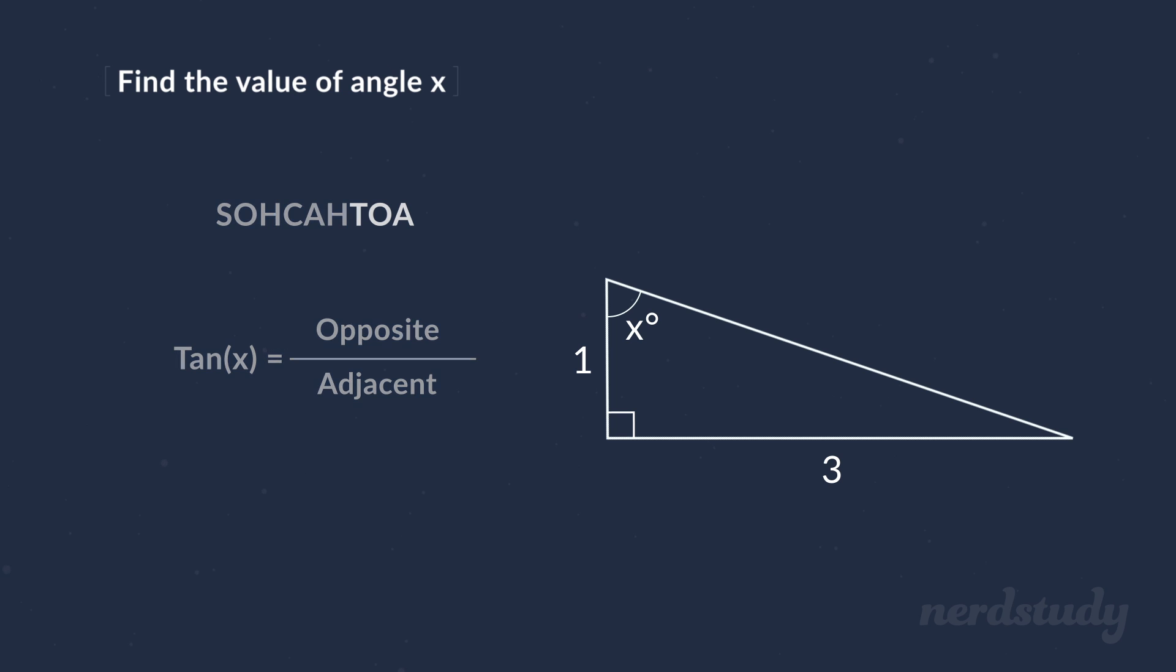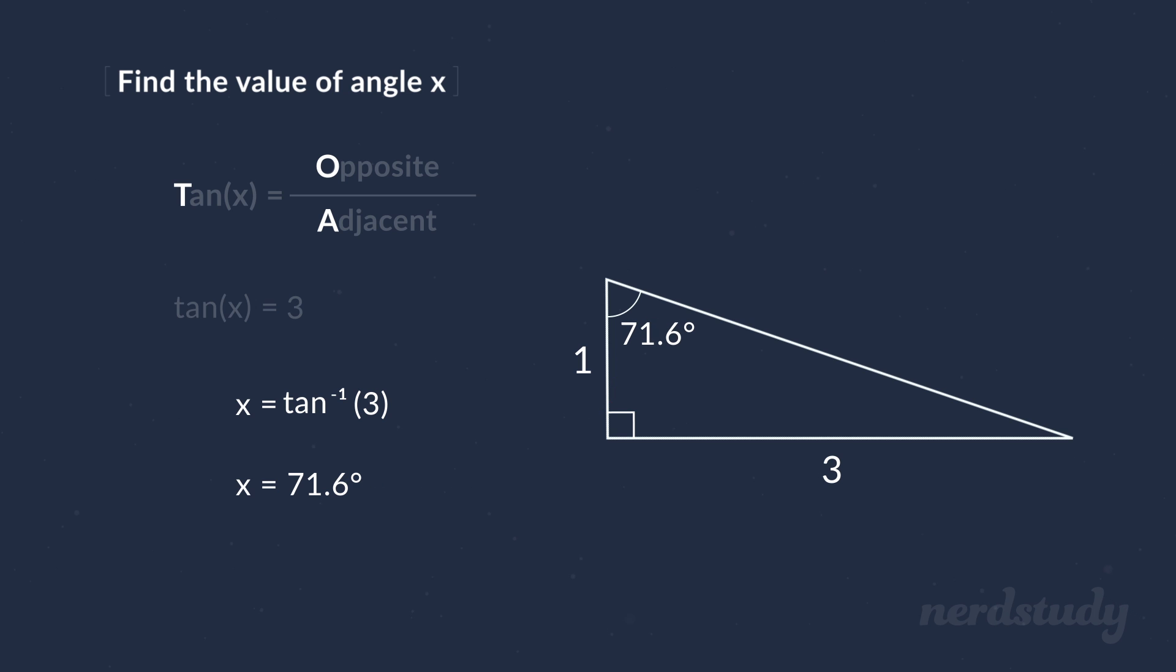we can use the TOA and realize that the tangent function is the one that we want to use since it involves the opposite and adjacent sides in its formula. So let's plug in our values to get tangent of x equals 3 over 1. This just equals 3. Take the inverse tangent of 3 to get this. And calculating this will give us a final answer of x equals roughly 71.6 degrees. Awesome. It's as easy as that.